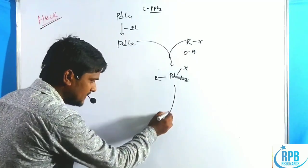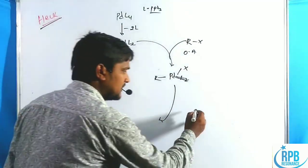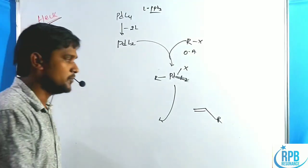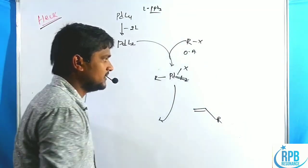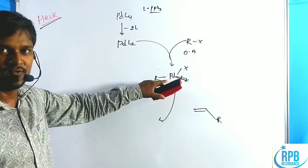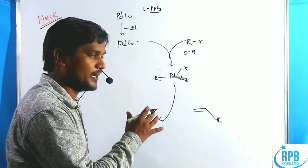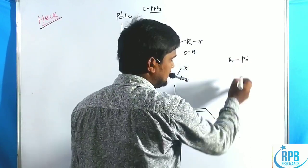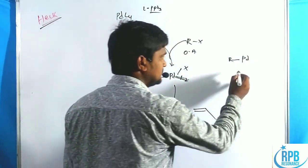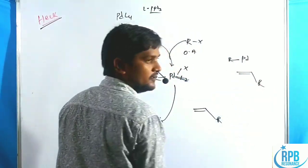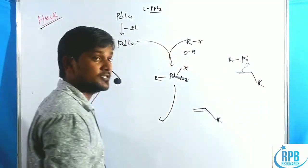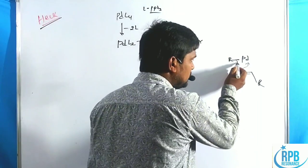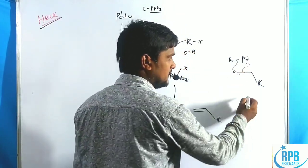In the second step, alkene insertion occurs — a carbopalladation reaction. The alkene inserts over the palladium catalyst. The alkene π-bonded electrons shift towards the palladium metal, because palladium is electronically deficient.